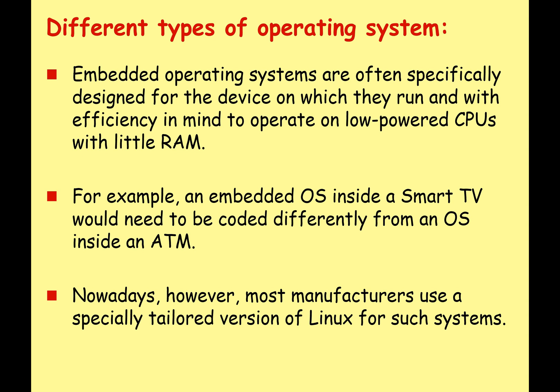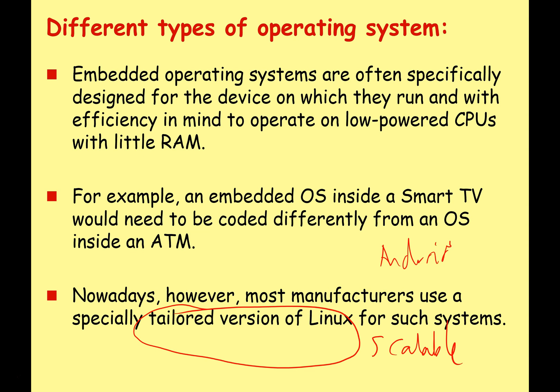For example, an embedded OS inside a smart TV would need to be coded very differently from one inside an ATM. However, nowadays most manufacturers often use a specially tailored version of Linux for such systems, as Linux is very scalable — meaning we can use it on lots of different systems. People might use a special form of Linux called Android, which Google uses in phones, as an embedded OS on many types of device. We can add or remove features to make it more or less efficient depending on our needs.